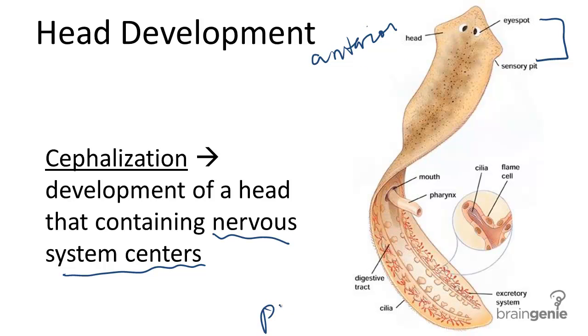And the rear, or the posterior end of the body, usually holds the digestive, excretory, and reproductive organs. This conferred an evolutionary advantage in terms of feeding and survival mechanisms.